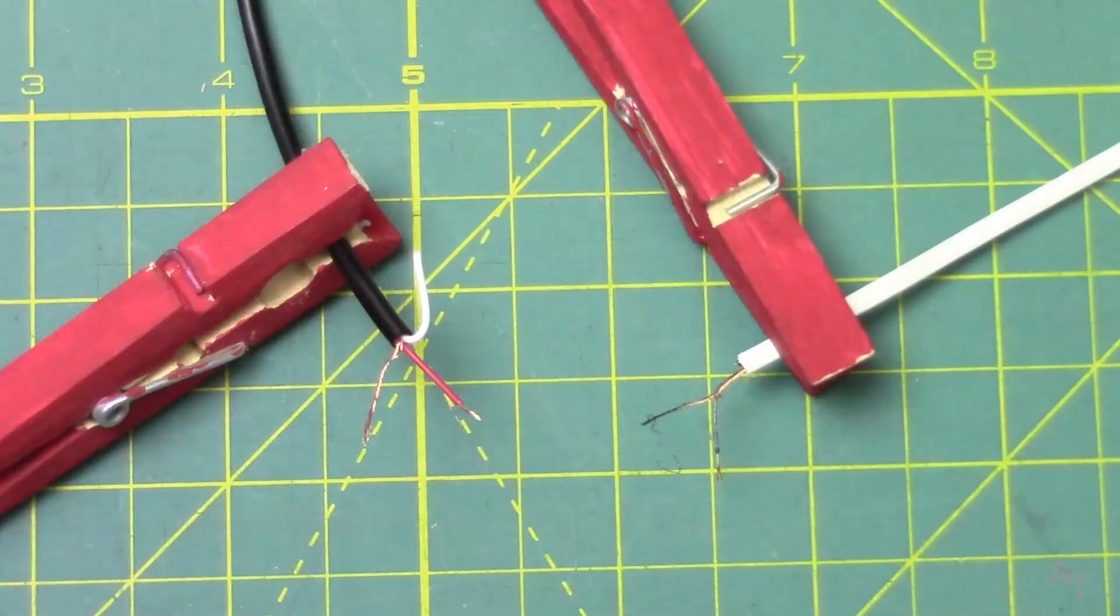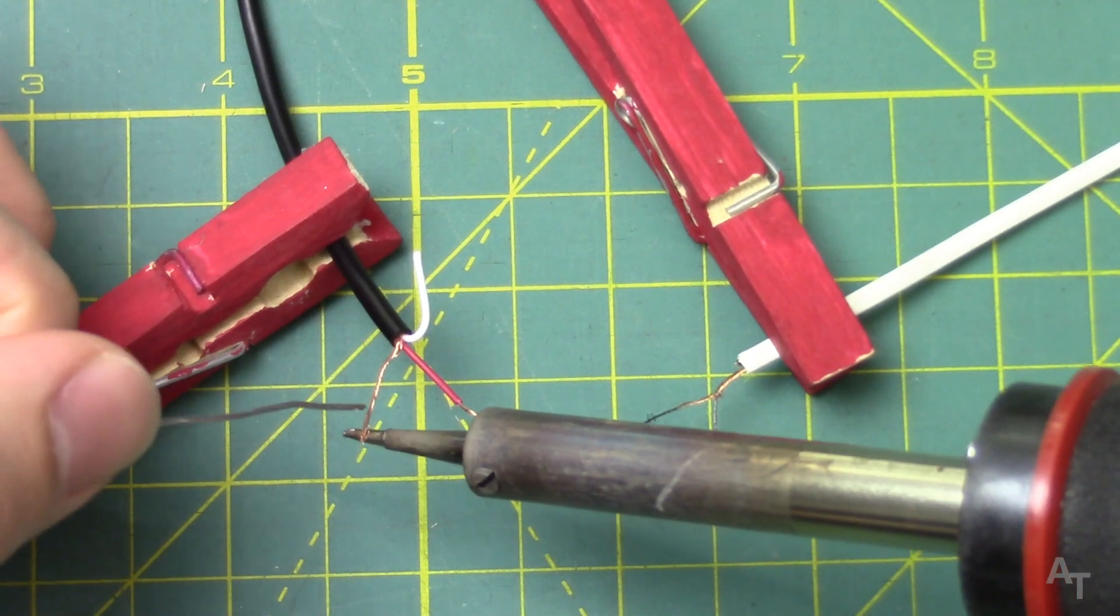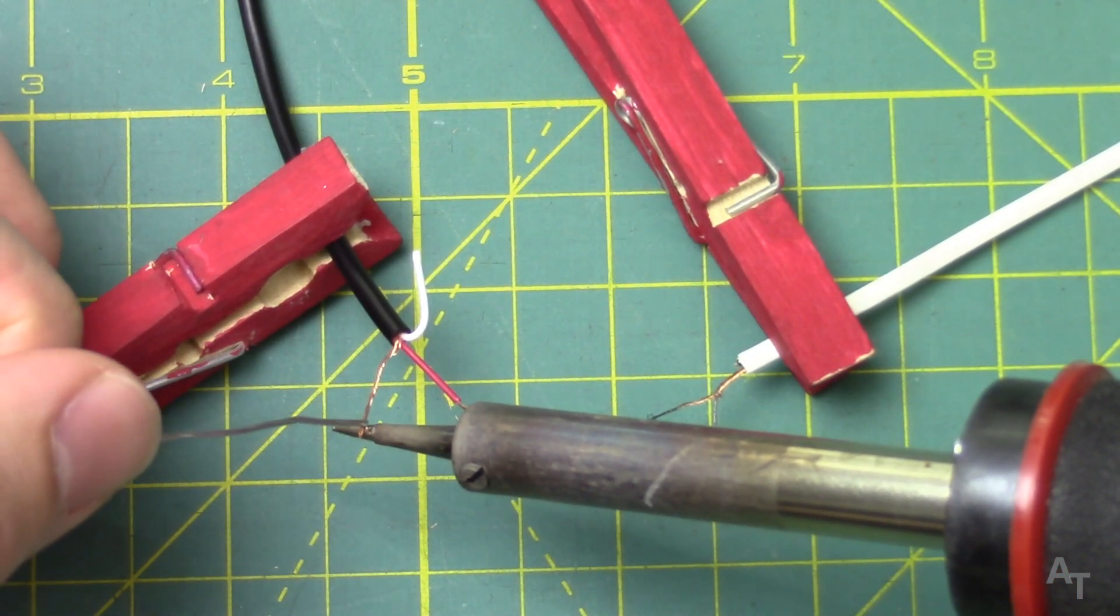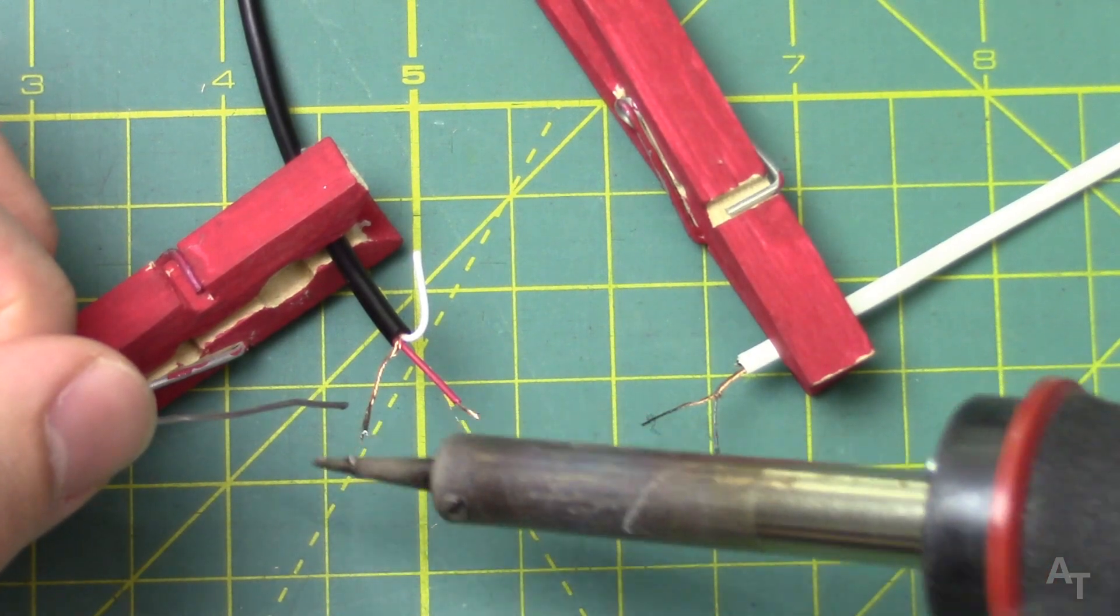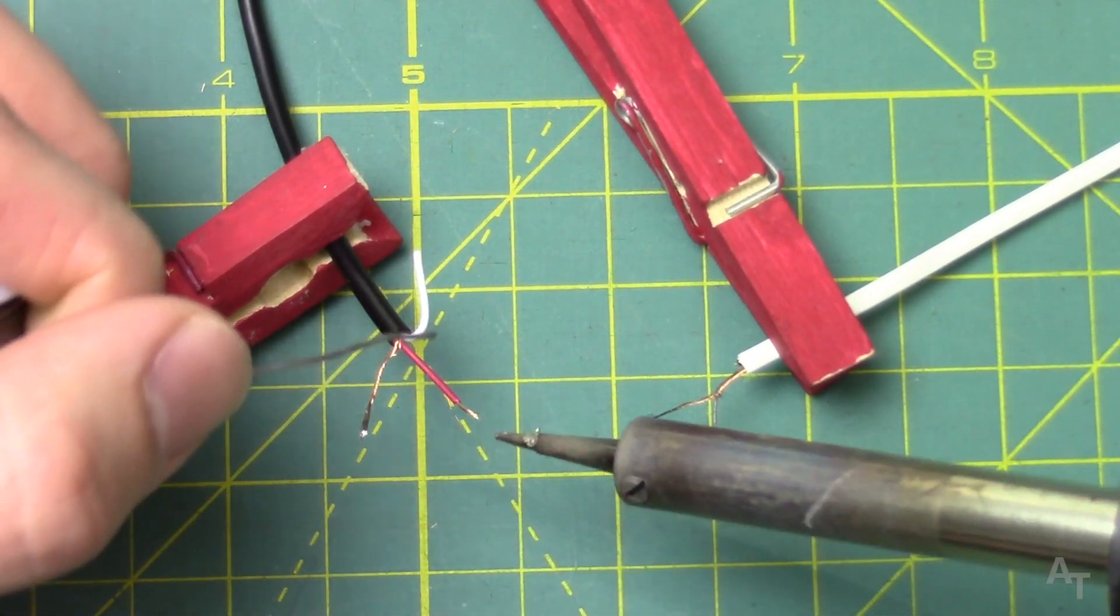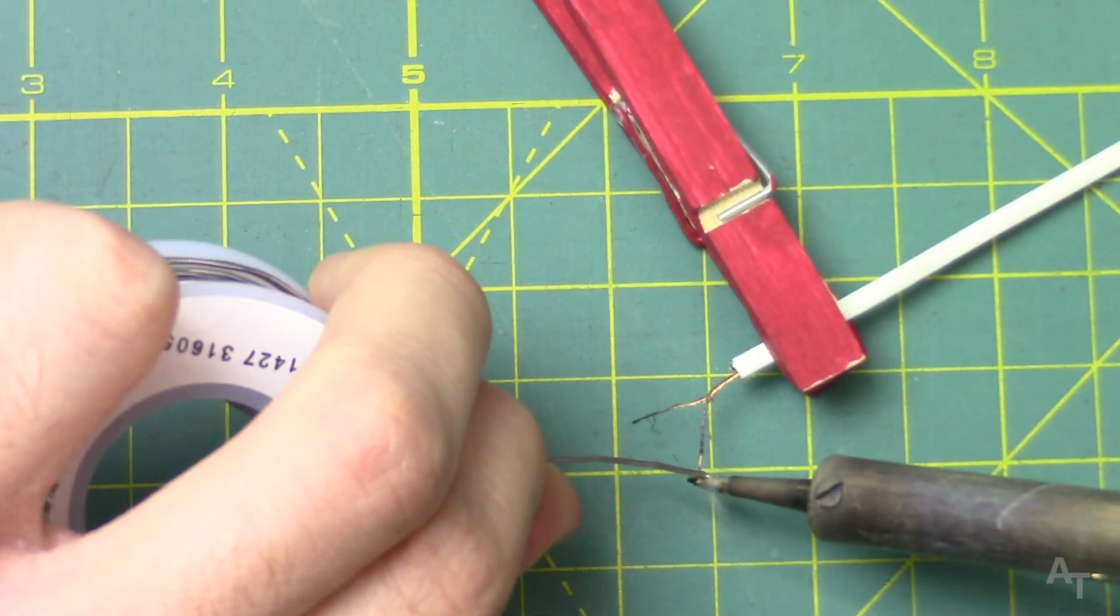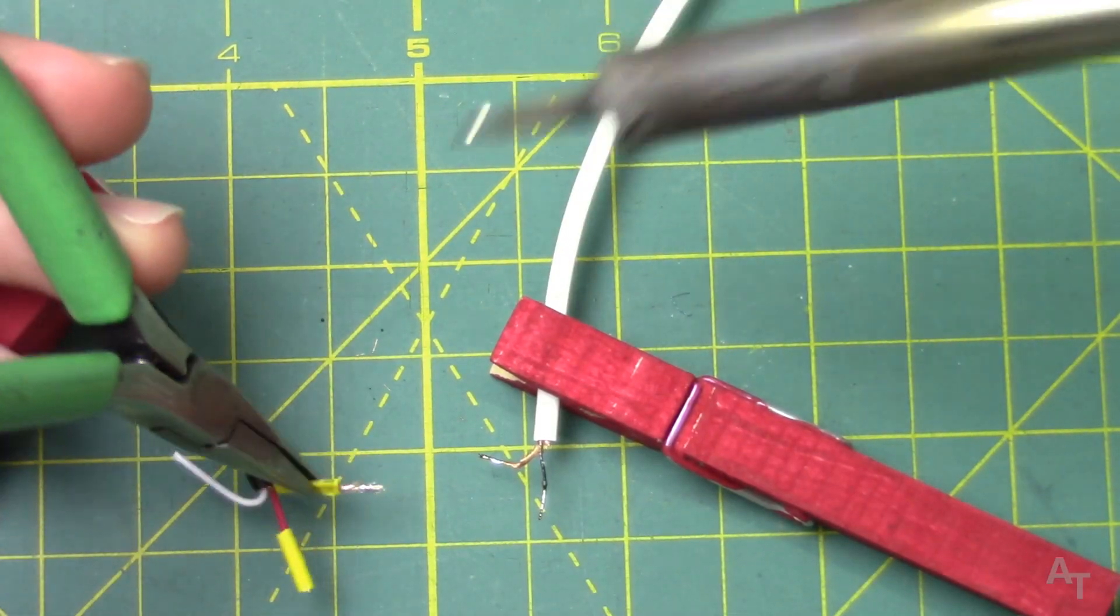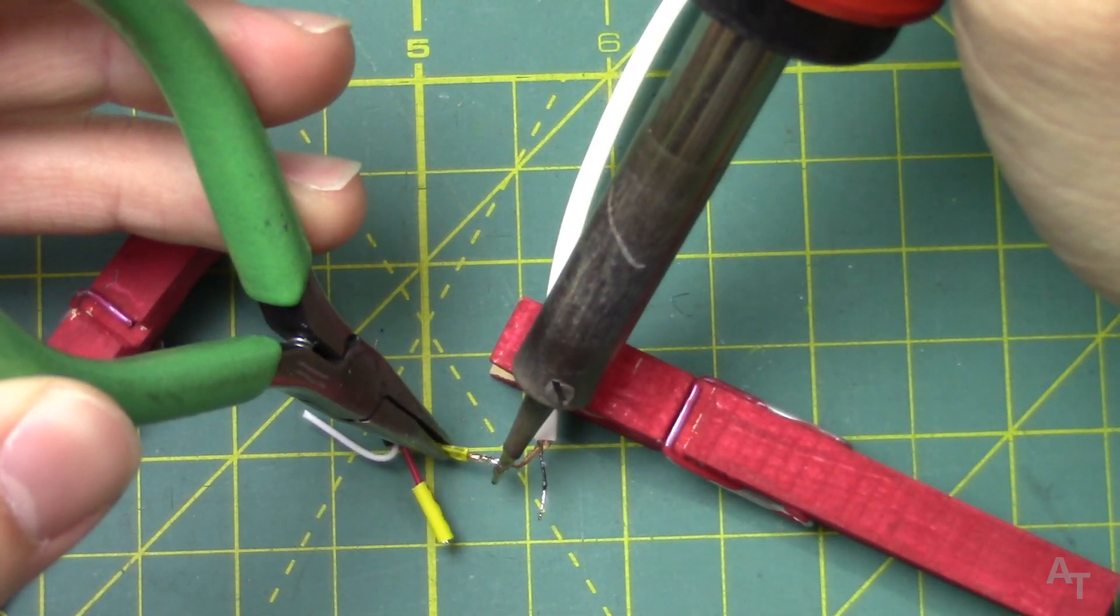Now we have all the wires, all of the ground copper ground wires, we're gonna twist them together. Now I'm going to get my soldering iron and tin these wires in preparation for soldering them together, which just means I'm going to add a very small amount of solder to the wires so it'll be easier to solder them together.